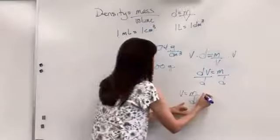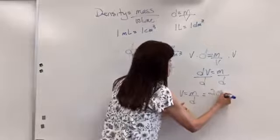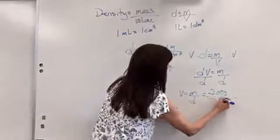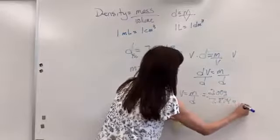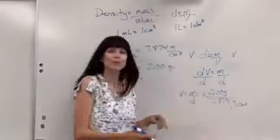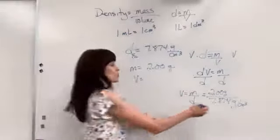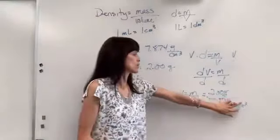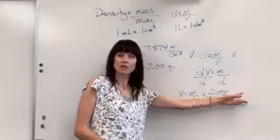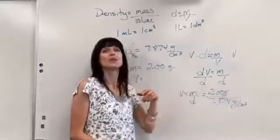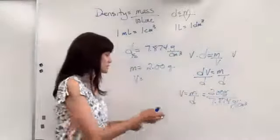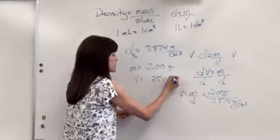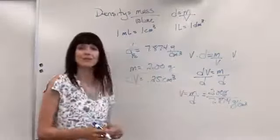Now let's plug in our numbers. We are going to have 2 grams divided by 7.874 grams per centimeter cubed. Ooh look what happens to the units. Grams cancel and because it's a fraction divided by a fraction we're going to reciprocate that centimeter cubed and it's going to go into the numerator. The answer on this, the volume will be 0.25 centimeters cubed. So that's how you can solve for volume.